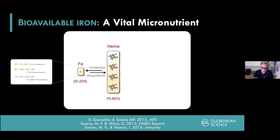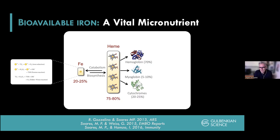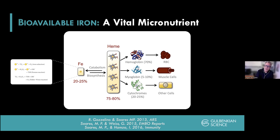About 20 to 25% of iron is catalytic iron, bound to an acceptor protein or to lipids. But the large majority — about 75 to 80% — is conjugated or inserted into a molecule called heme, which is a protoporphyrin ring, and this is part of vital proteins. Hemoglobin carries about 70% of these heme-containing molecules. Myoglobin carries about 5 to 10%, and every other cell expresses heme proteins accounting for about 20 to 25%, corresponding to red blood cells, muscle cells, and other cells.